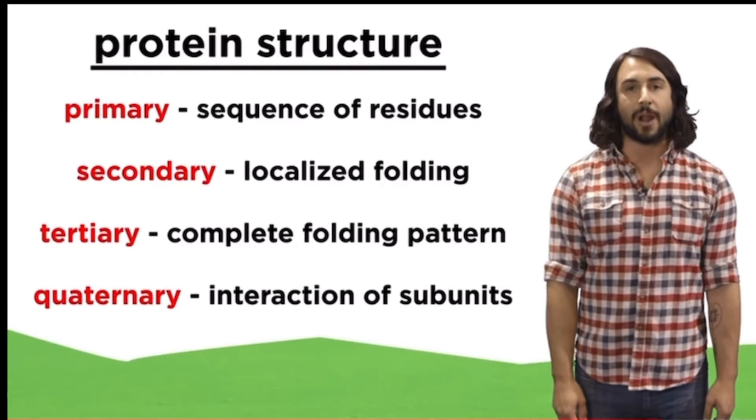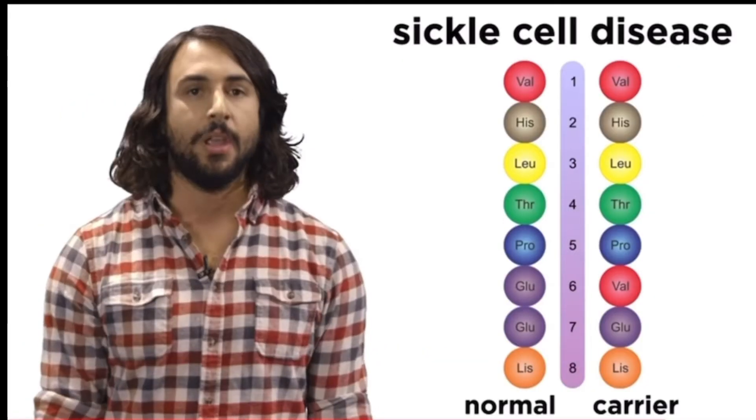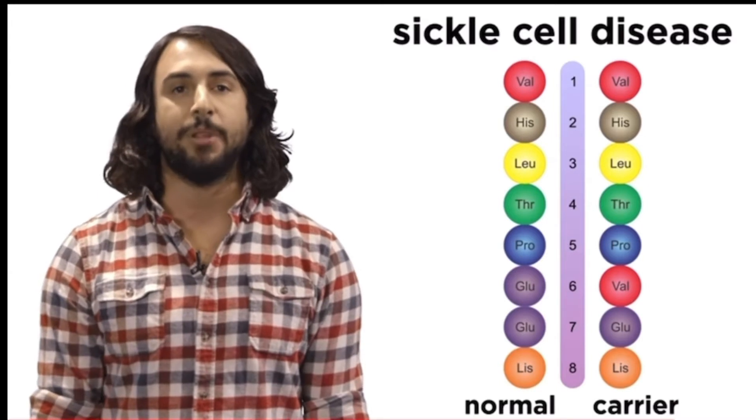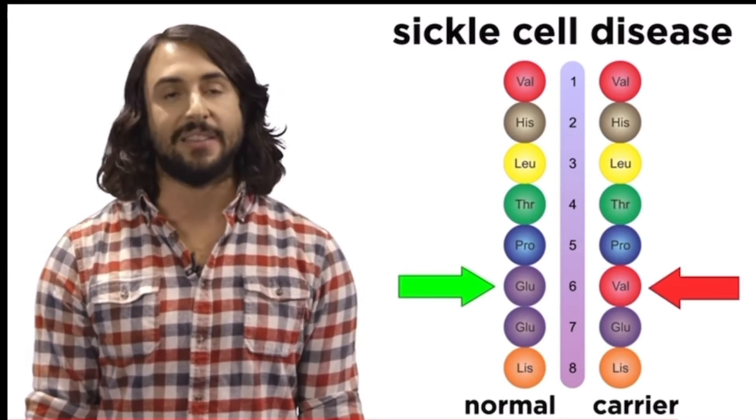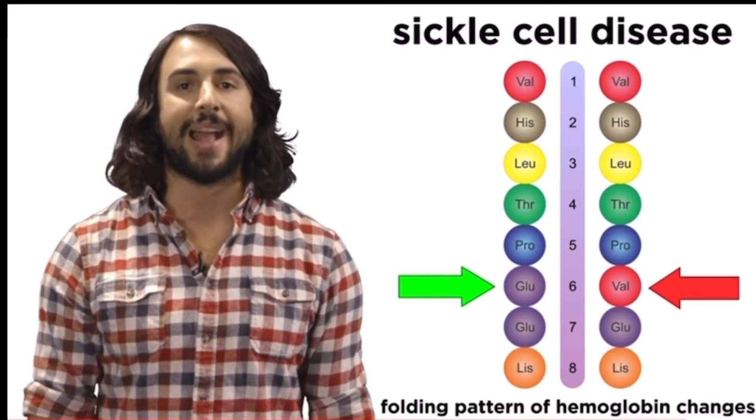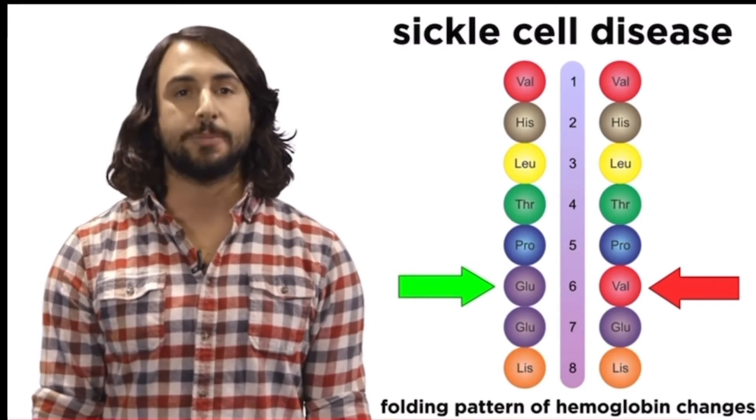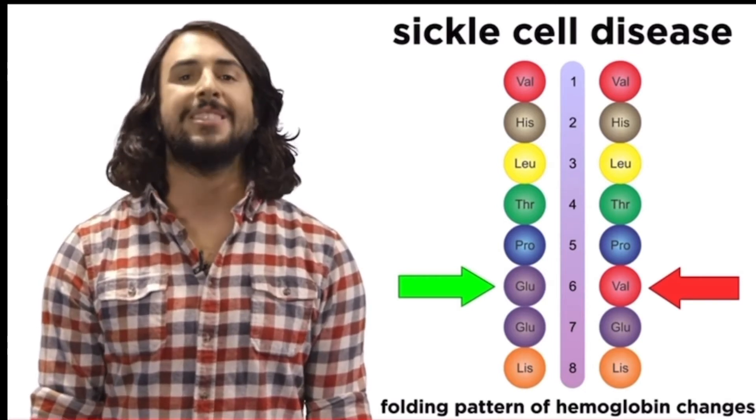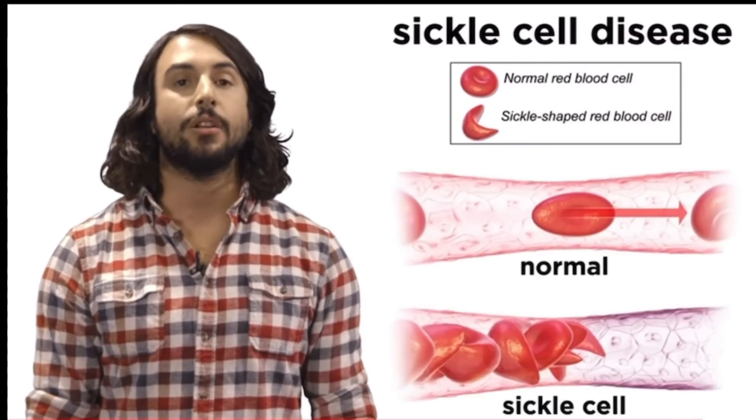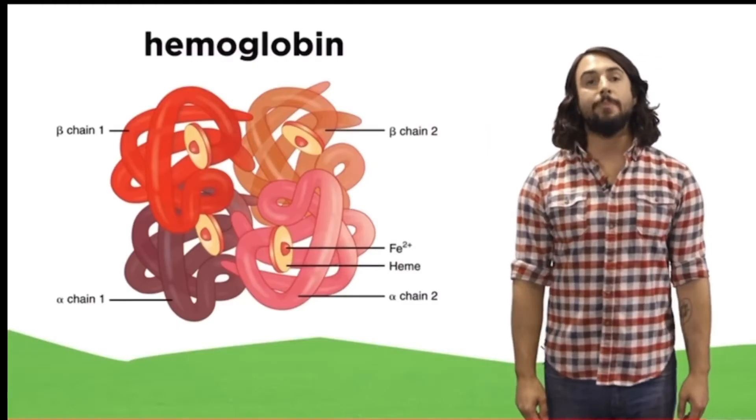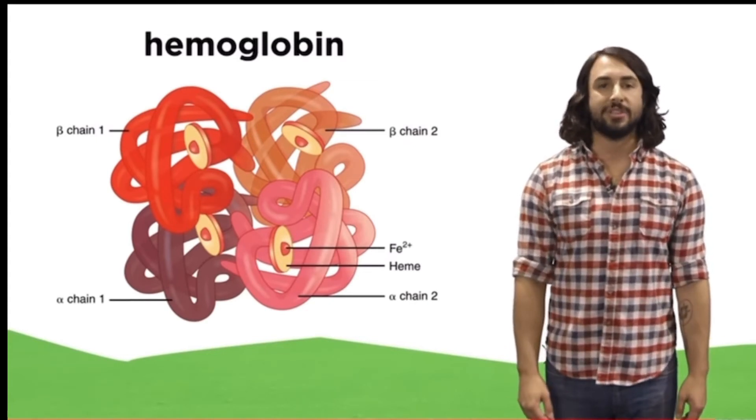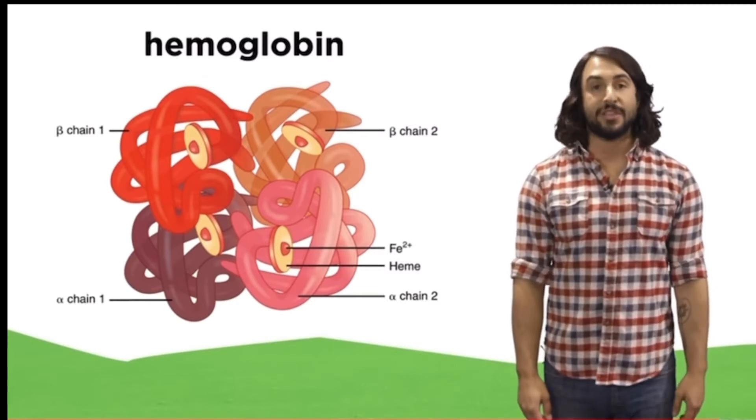It is important to understand that even a tiny change in primary structure can completely change the overall protein. For example, sickle cell disease is a genetic disorder where just one amino acid residue in one of the subunits of hemoglobin is changed from glutamic acid to valine. Because the side chains of those two amino acids are so different, the mutation changes the folding pattern at that location, and the resulting hemoglobin protein, which is responsible for carrying oxygen through the bloodstream, takes on a different shape, causing the red blood cells that contain hemoglobin to look like tiny sickles, which can then clog blood vessels. So we can already begin to see why understanding the structure and function of biomolecules is crucial if we want to understand health and disease.